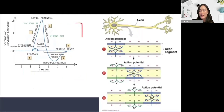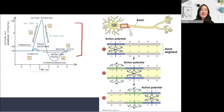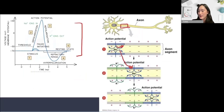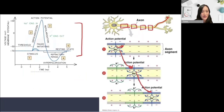This action potential is occurring at one region of the axon. The diffusion of sodium will trigger a wave of depolarization in the next segment of the axon, and this nerve impulse will then be propagated all the way down the axon until we reach the axon terminal.